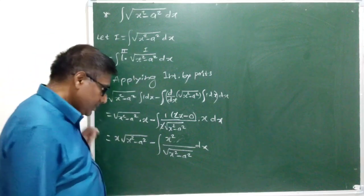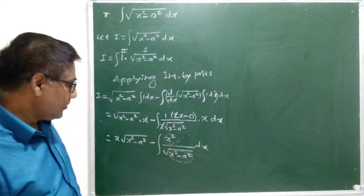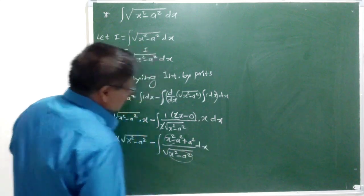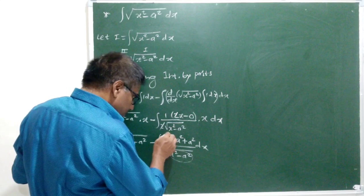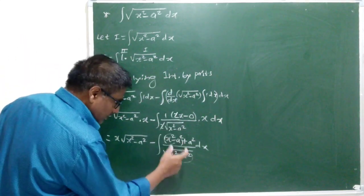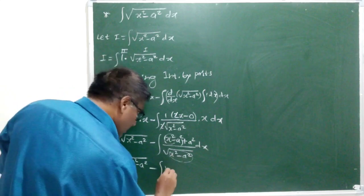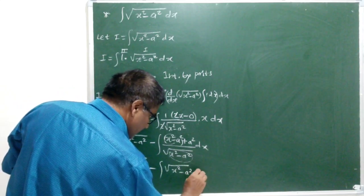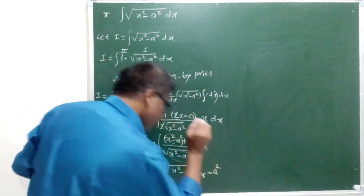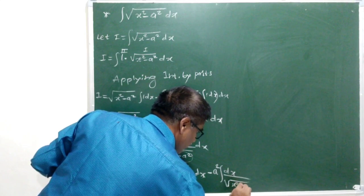If you look at this function, we have x square minus a square inside the root and in the numerator we have x square. We don't have a square at all. Therefore, let us add and subtract a square — I will write minus a square and plus a square. There is nothing wrong with writing it like this. Let us split the numerator and put it in separate integrals: this gives the integral of root x square minus a square dx minus a square times the integral of 1 over root x square minus a square dx.